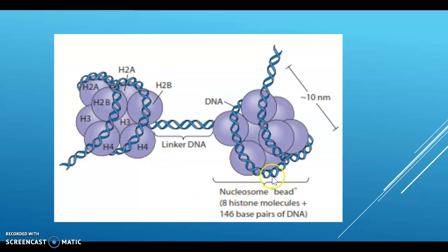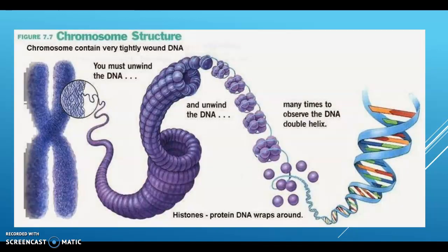Each individual nucleosome core particle consists of eight histone proteins — two molecules each of H2A, H2B, H3, and H4 — with double-stranded DNA of 146 base pairs wrapped around it. The histone octamer forms a protein core around the double-stranded DNA molecule. Each nucleosome core particle is separated from the next by linker DNA of about 80 base pairs.